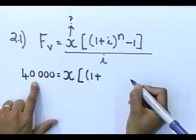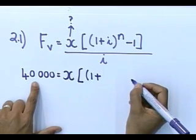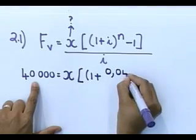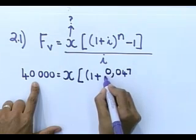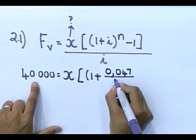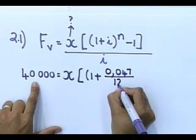It's 1 plus. Let's go look at our interest rate. What's my interest rate? 4.7%. So, it's 0.047. That goes into the place of i. How is this interest rate compounded? It is compounded monthly. So, you are dividing by 12.